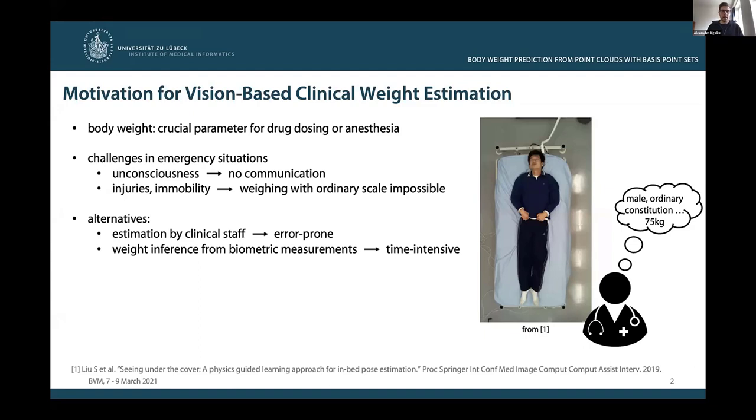In such situations, the estimation of body weight is still today often performed by clinical staff, although this procedure is known to be error-prone. More accurate weight estimates could be obtained by inferring weight from biometric measurements such as body height, waist circumference, and hip circumference.